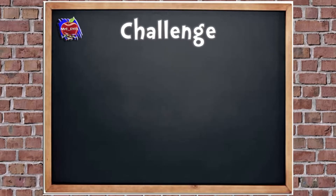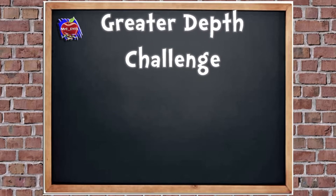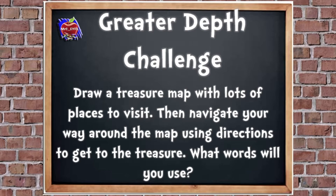Here's your challenge — hide an object in your room and use positional language to explain where it is for someone to find. You could say it's behind the cup, or it's under the flower pot, or it's next to the book. Keep hiding it in lots of different places. Then here's your greater depth challenge: draw a treasure map with lots of places to visit, and navigate your way around the map using directions to get to the treasure. Think about what words you will use.